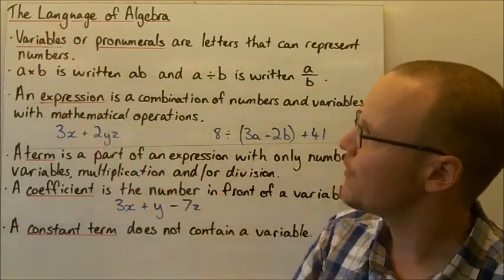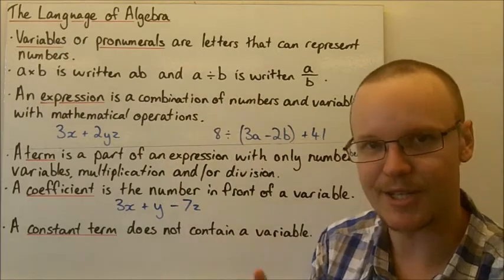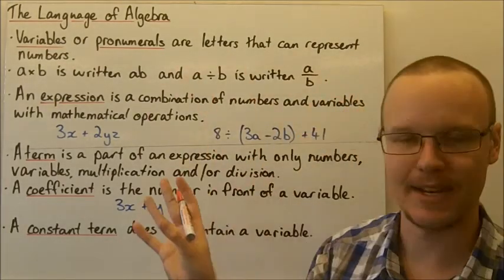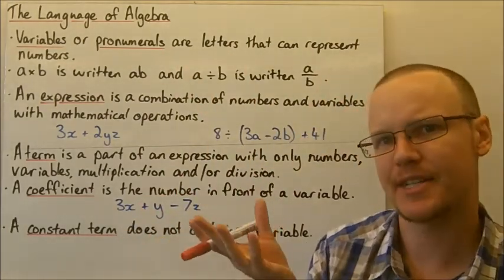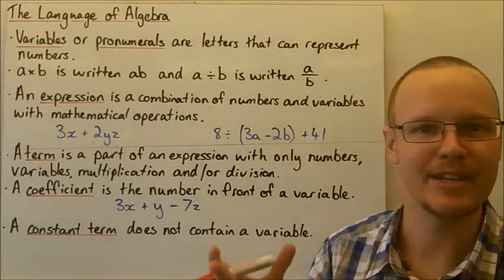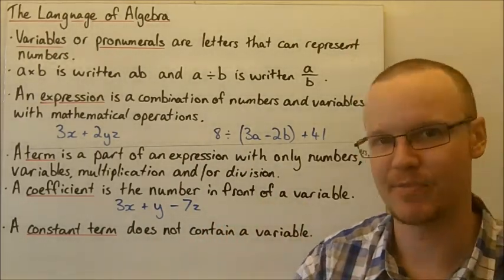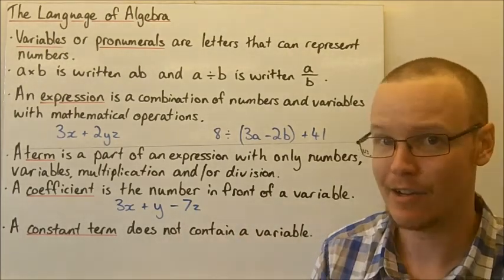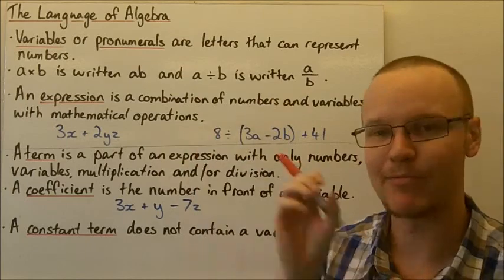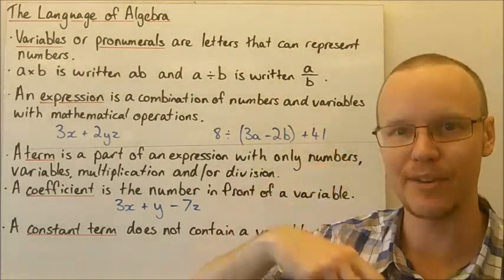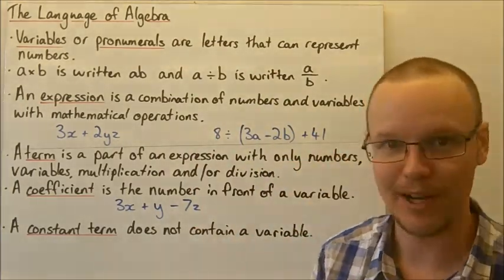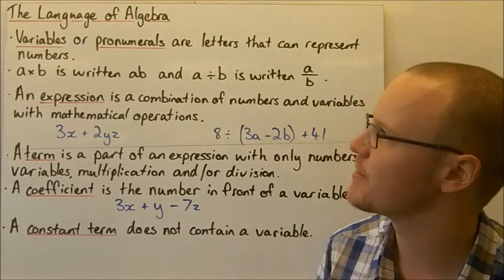Firstly, variables or pronumerals — these are the staple of algebra. They're letters that can represent numbers, and that's the fantastic thing about them. Sometimes we know what the variables are; maybe it's a velocity or speed, and we can give it a letter like V or S. We can replace it many different times with a different value, depending on the situation, depending on the velocity or speed that something's going.